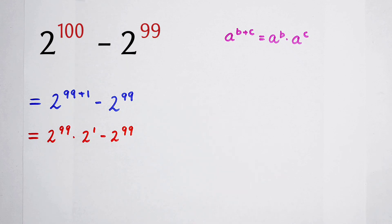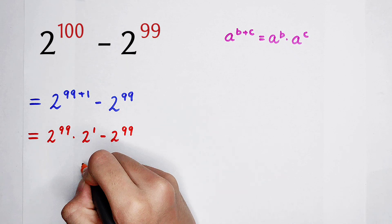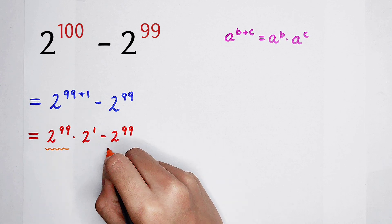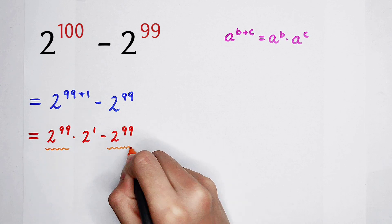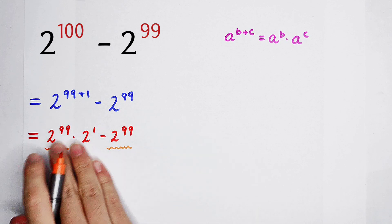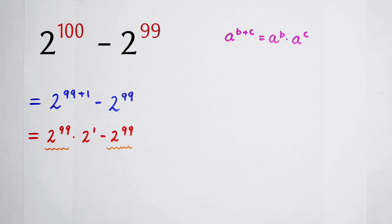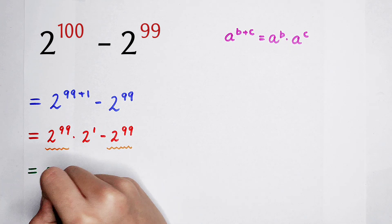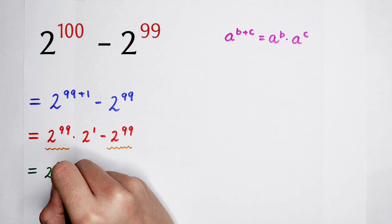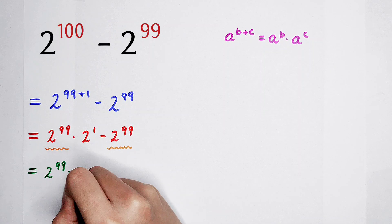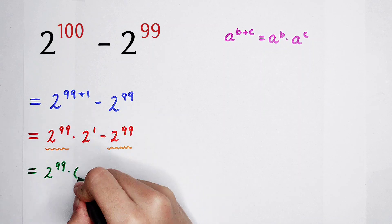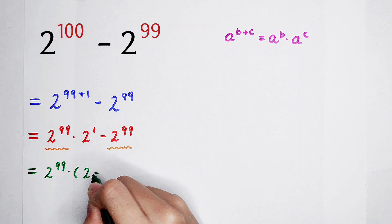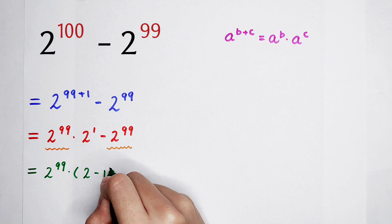Because these two terms have a common factor — that is, 2 to the power of 99 — we can factor it out: 2 to the power of 99, times 2 to the power of 1, which is 2, minus 1.